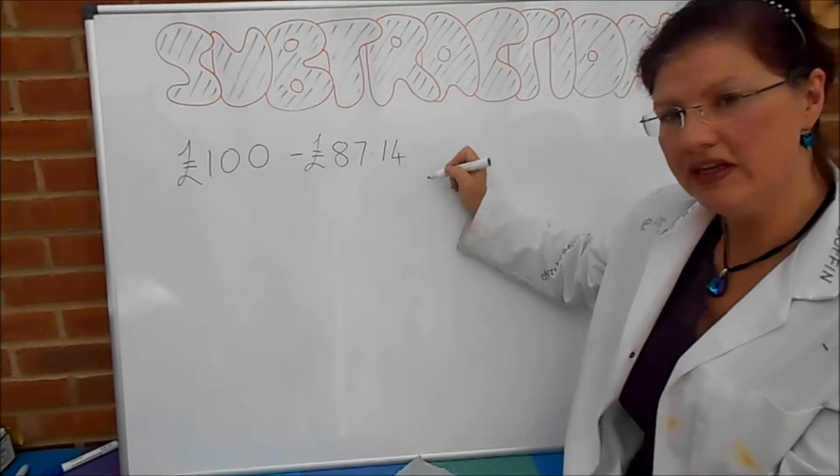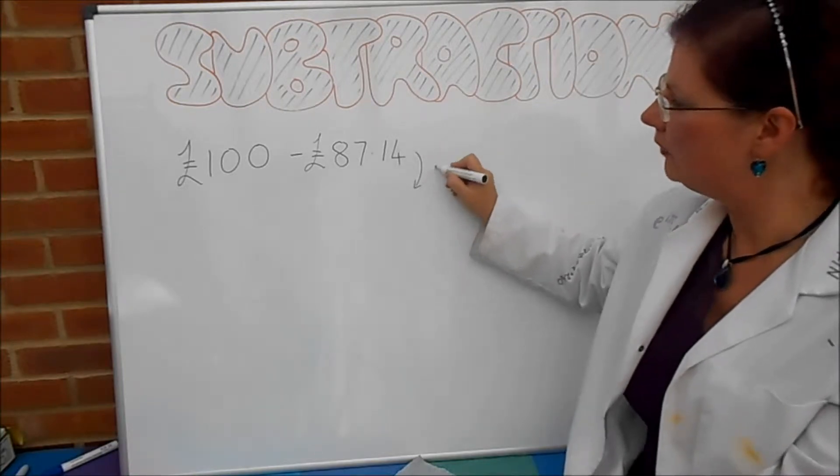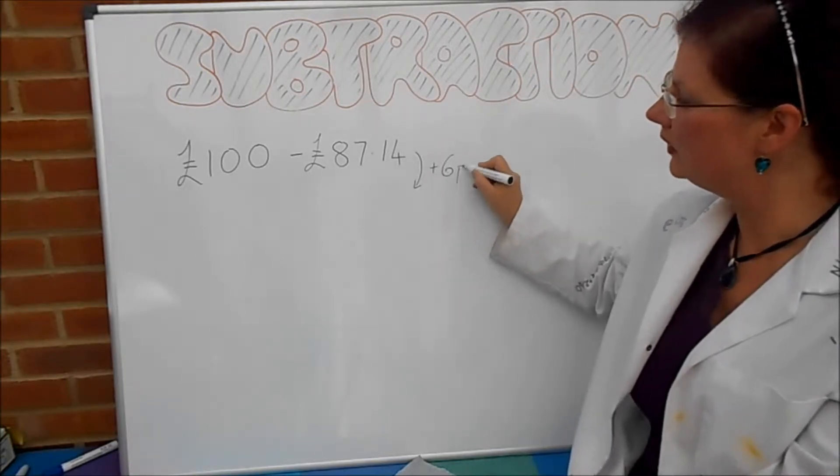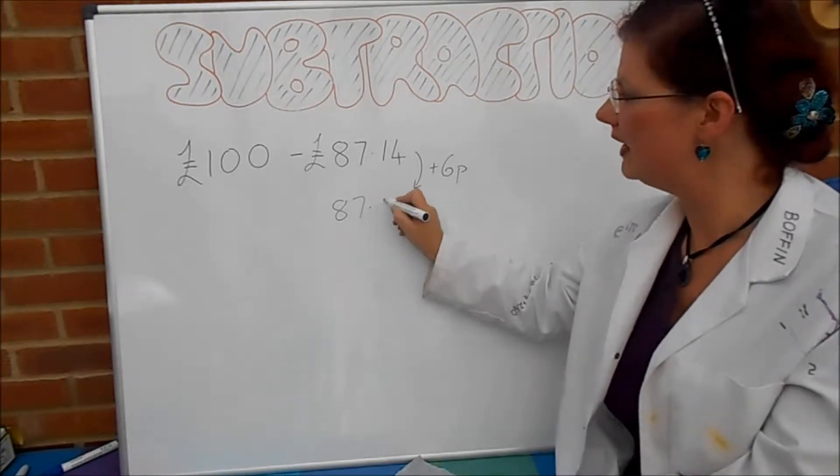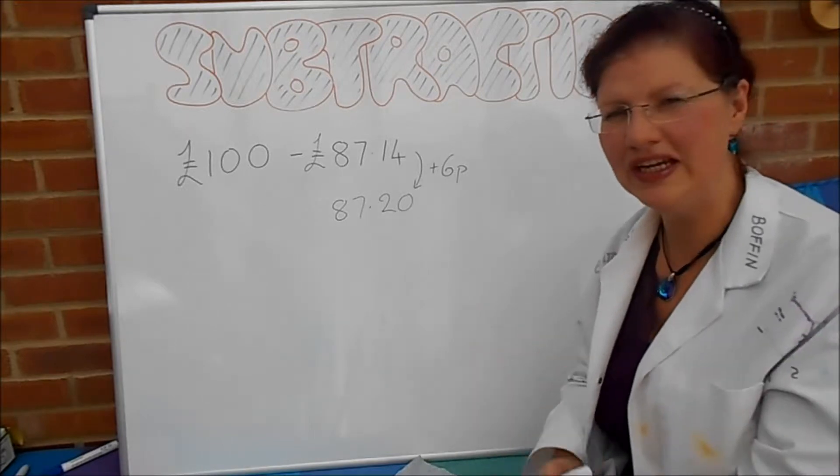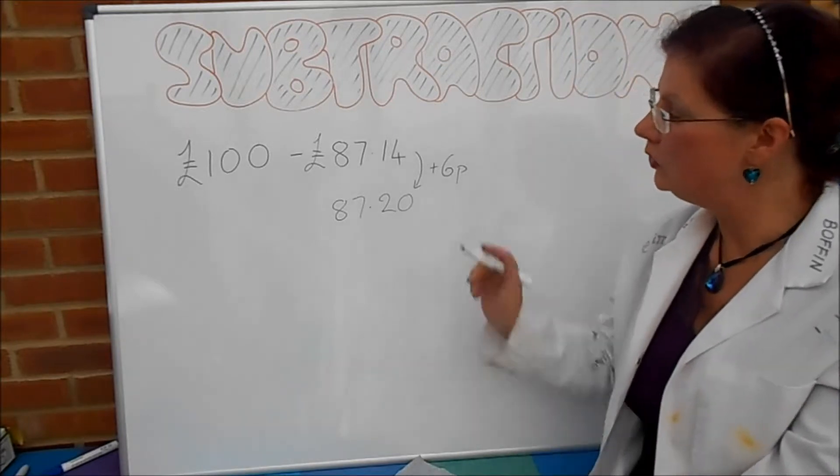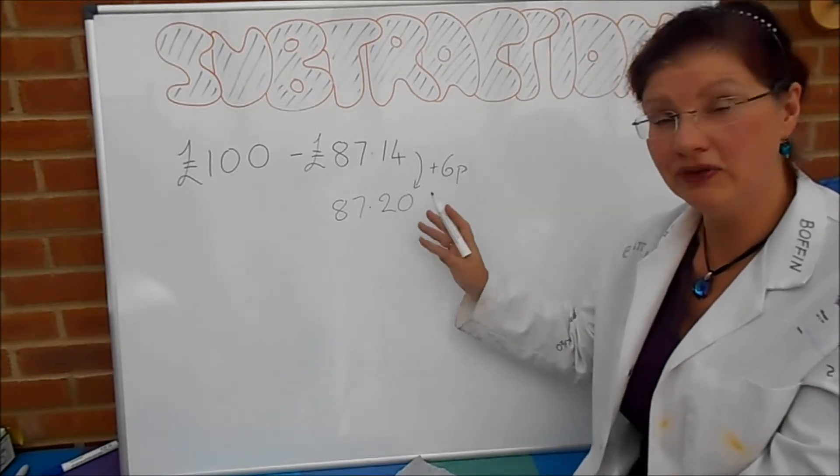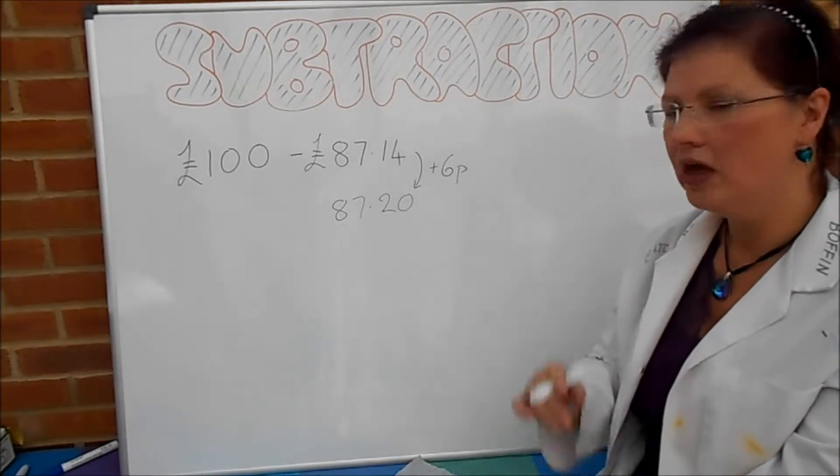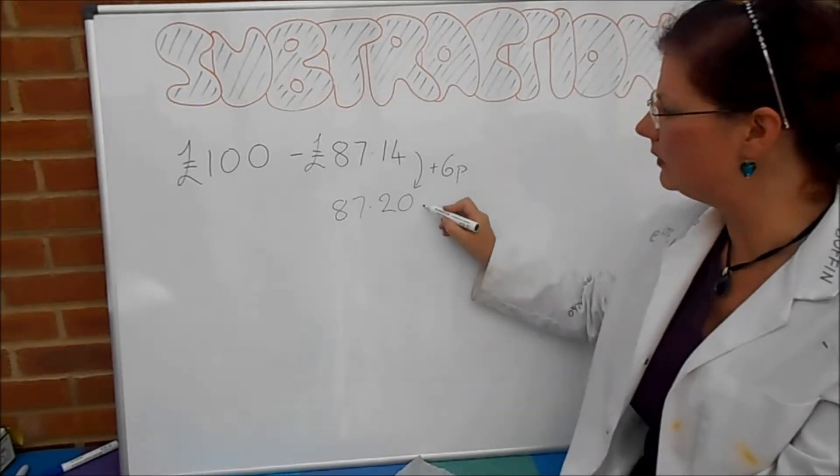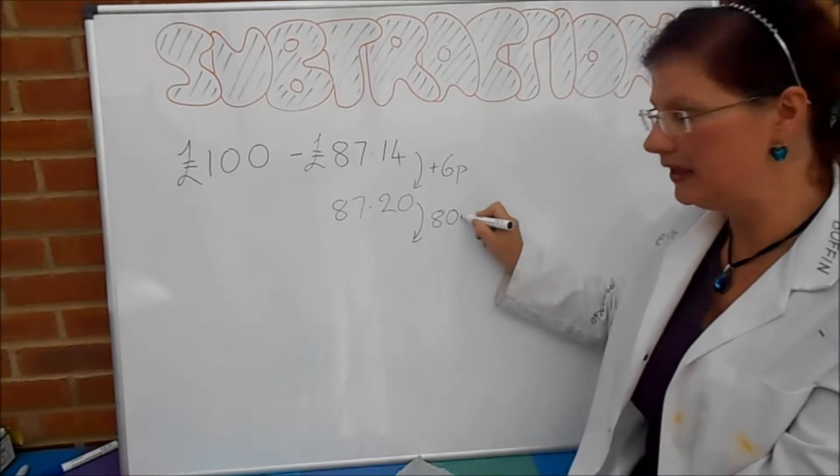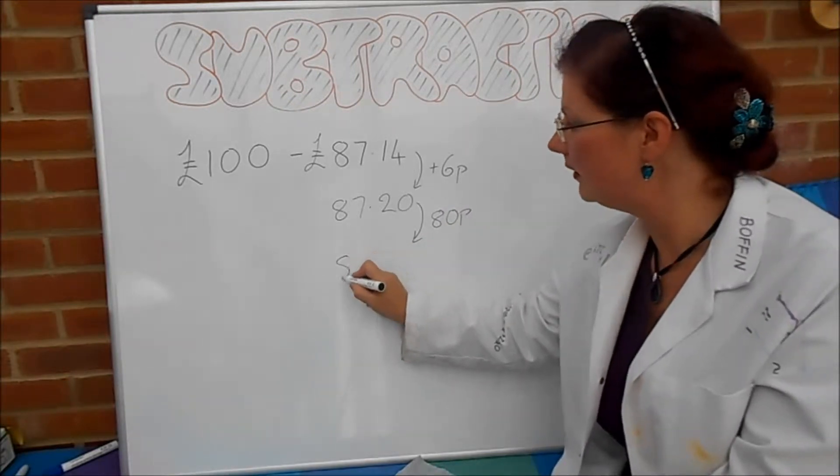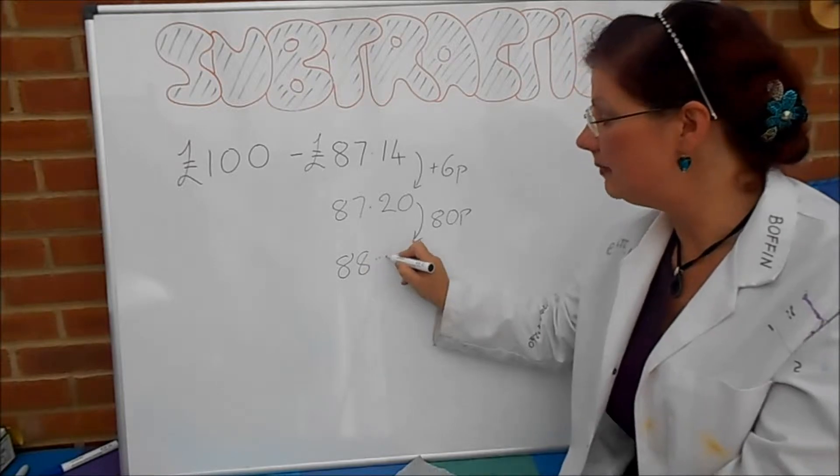So, starting with £87.14. For a start off, I'm going to add on 6p, because that brings it up to £87.20, the next convenient chunk. Now, you could go up to £87.50, that would be a nice convenient chunk, but I'm actually going to go up to the next pound. So, I'm going to add on 80p, and that will bring me up to £88.